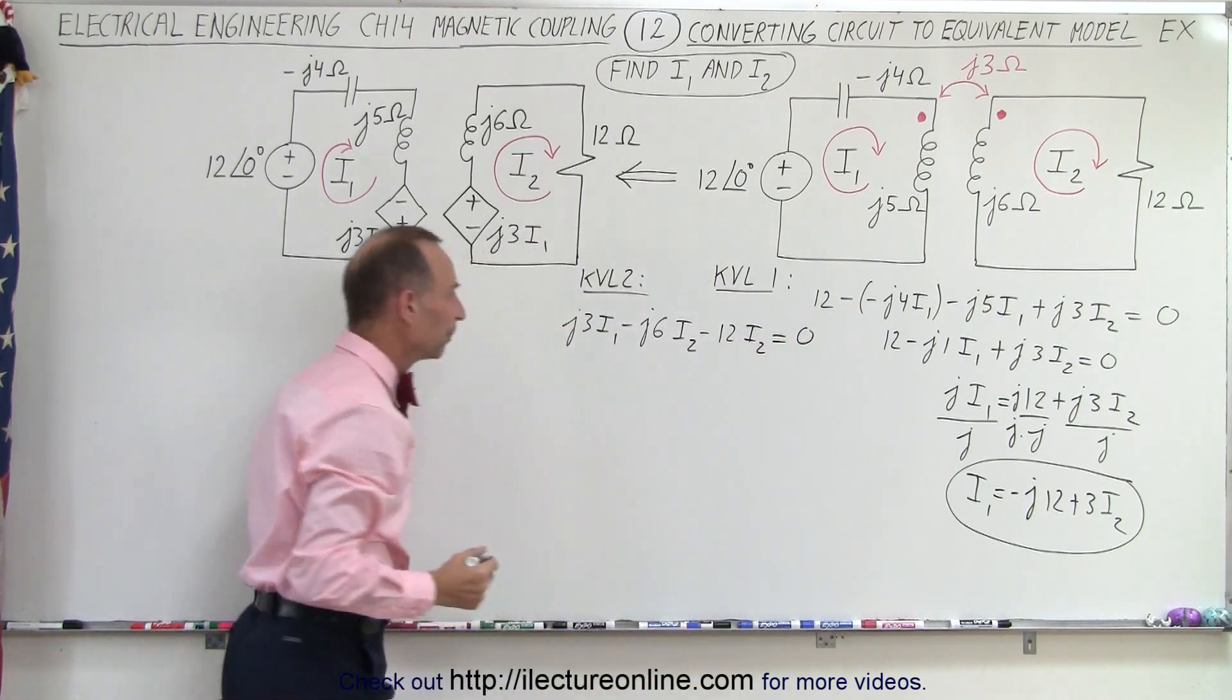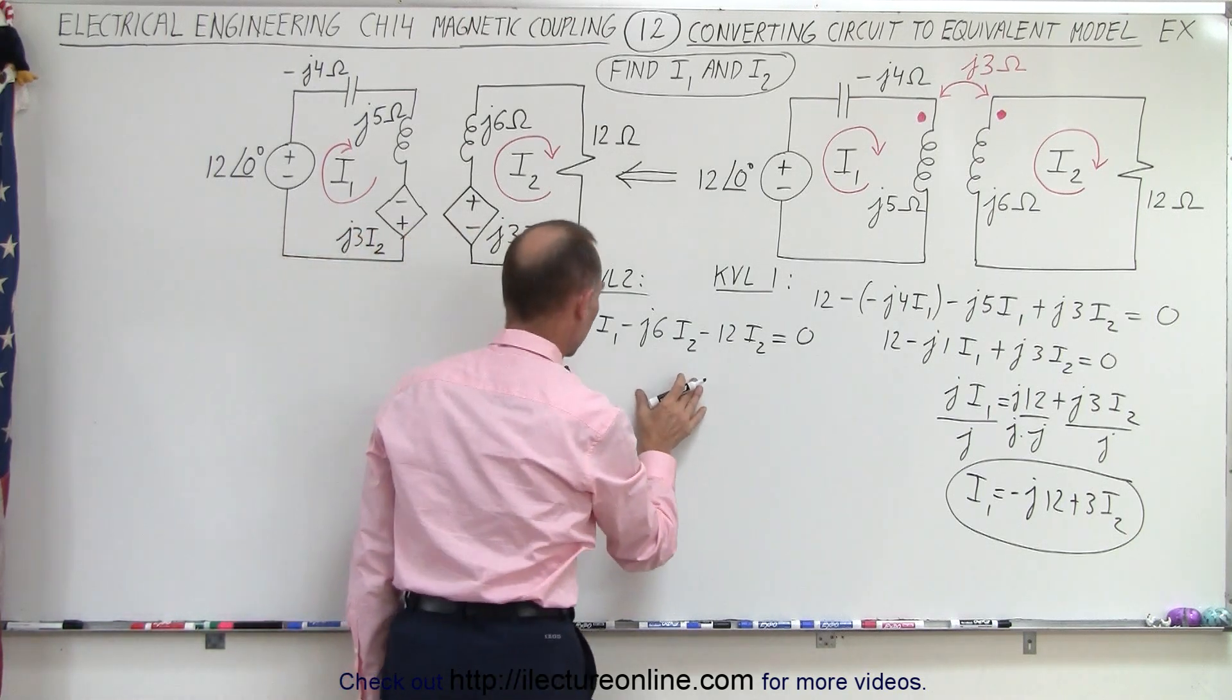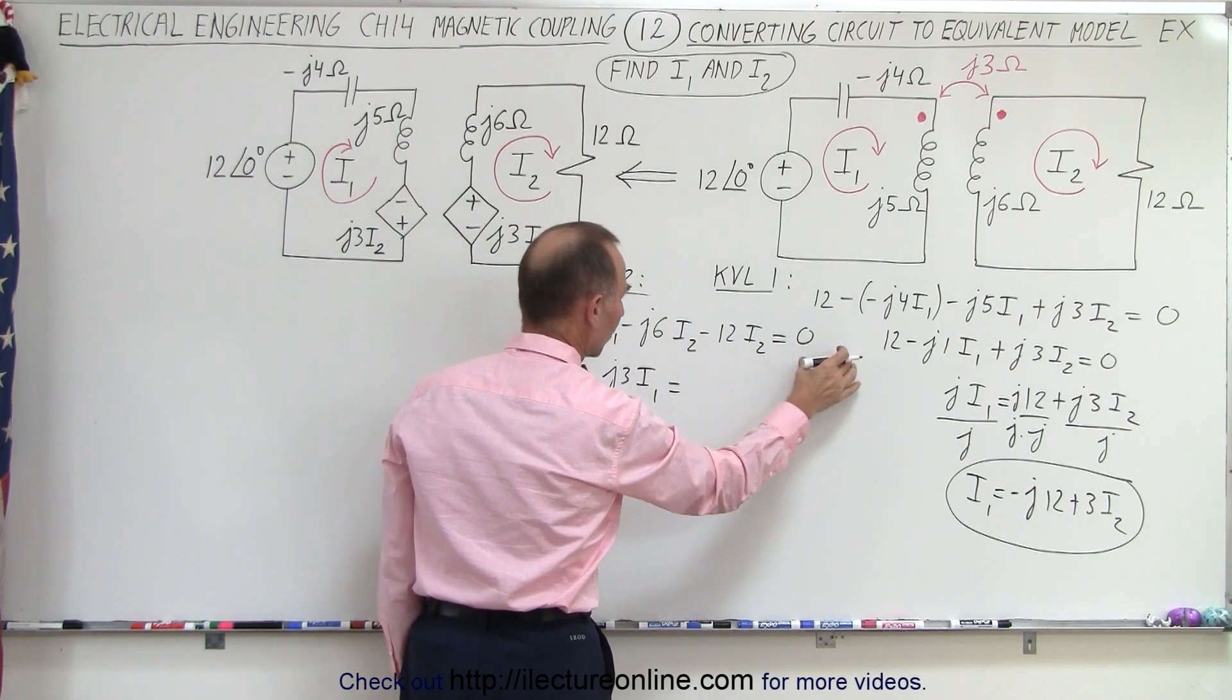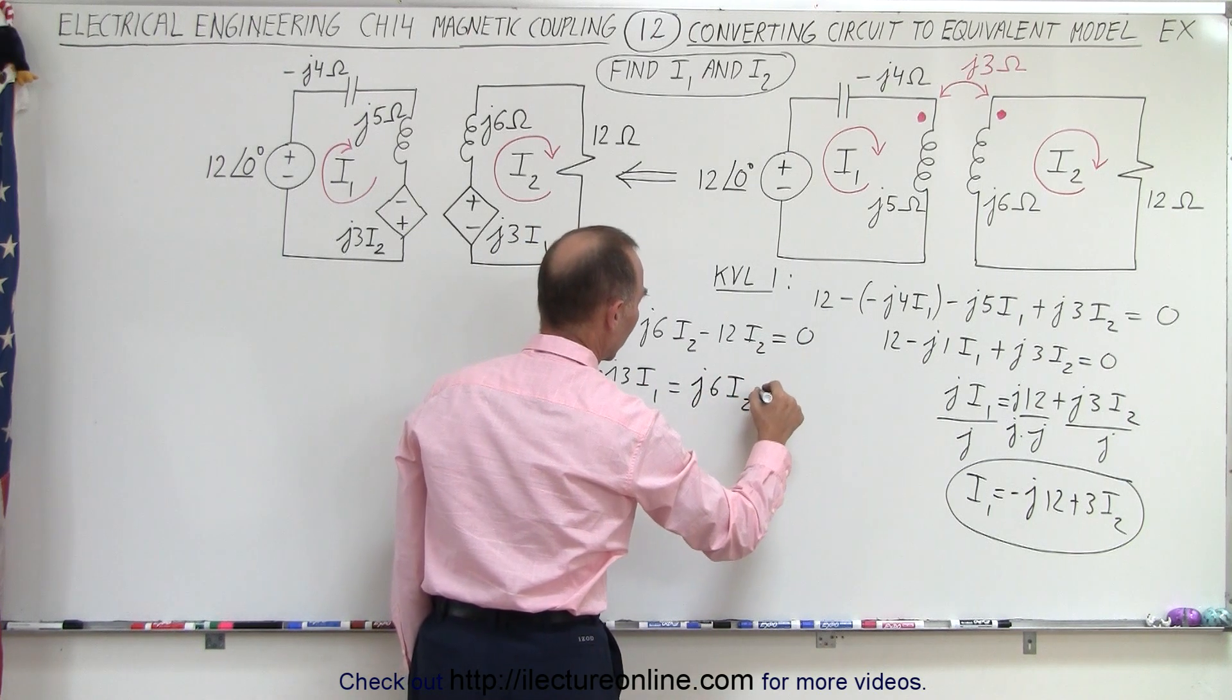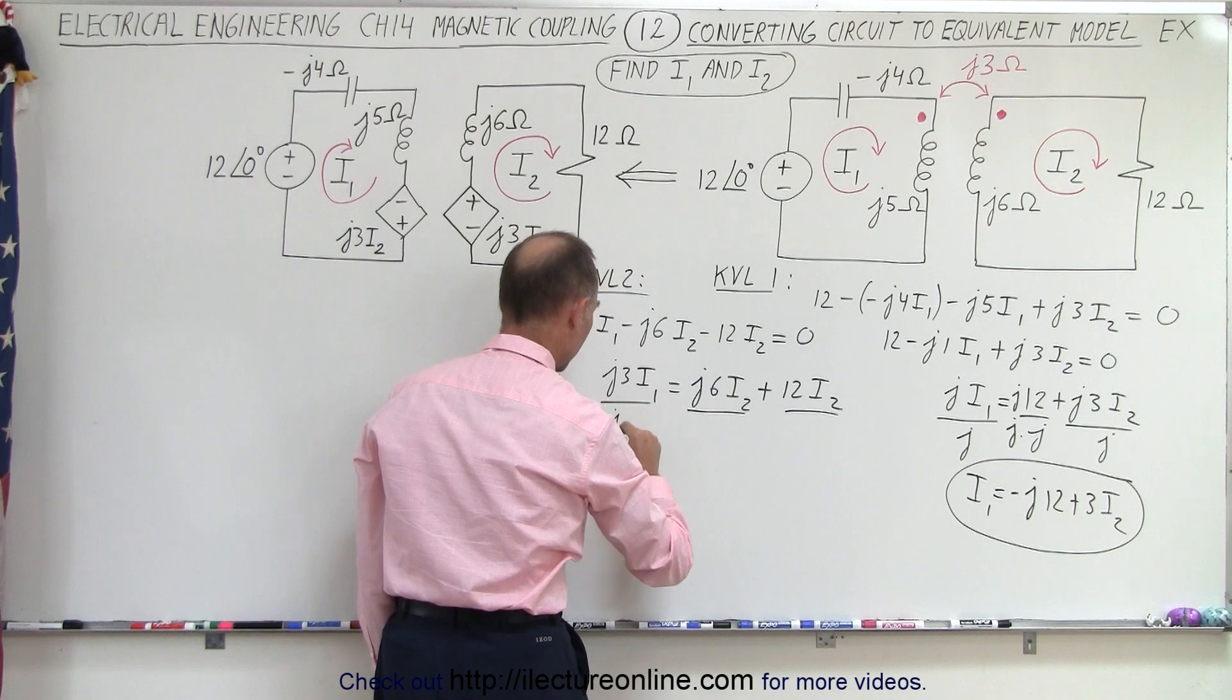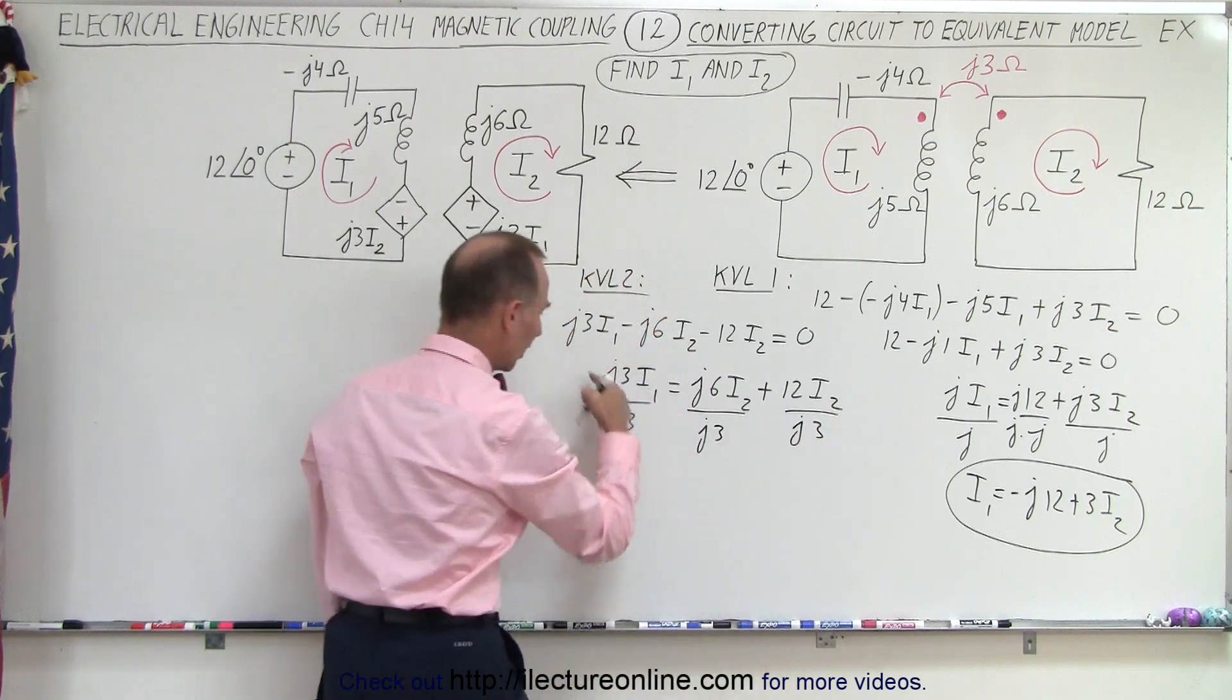And that adds up to zero. And again what we'll want to do here is solve for I1 in terms of I2. So that gives us J3I1 is equal to, when we move this to the right side, plus J6I2 and plus 12I2. And then we divide both sides by J3.